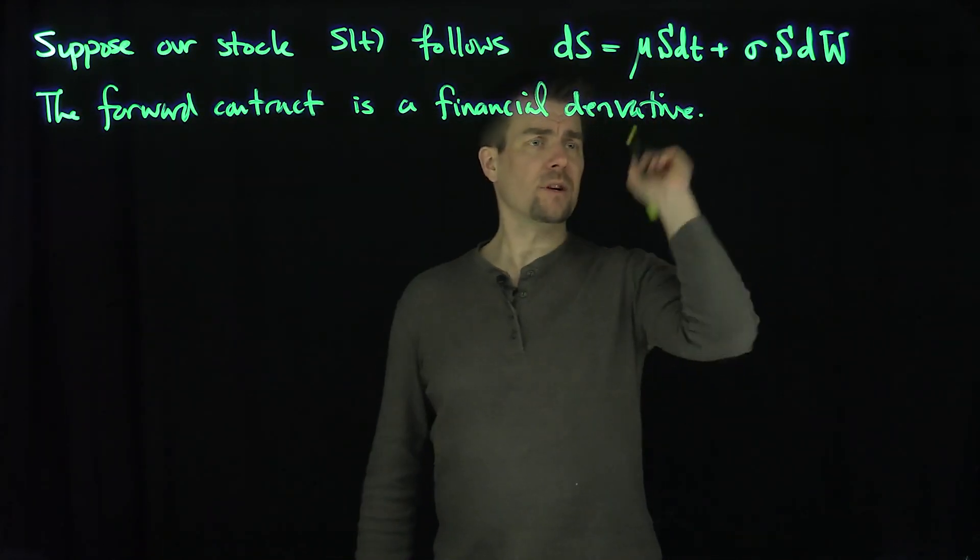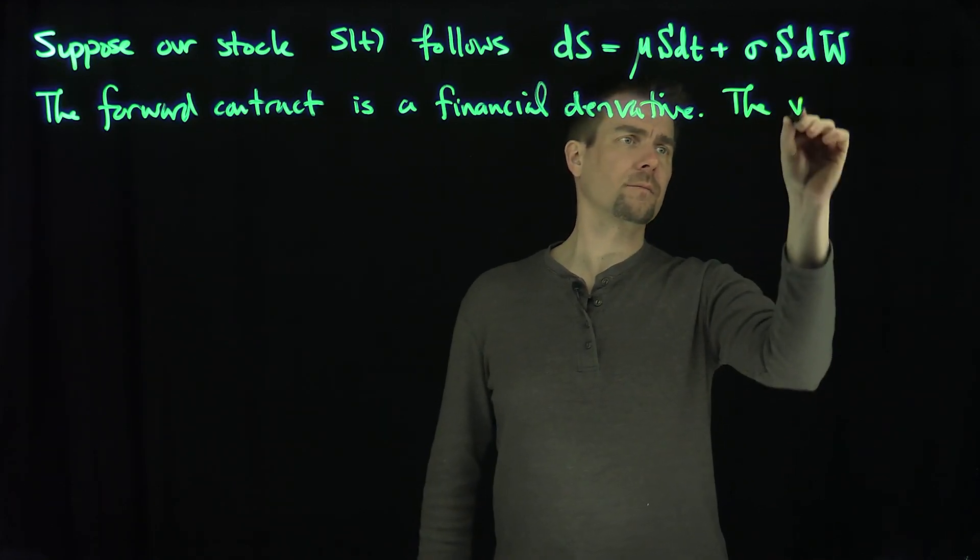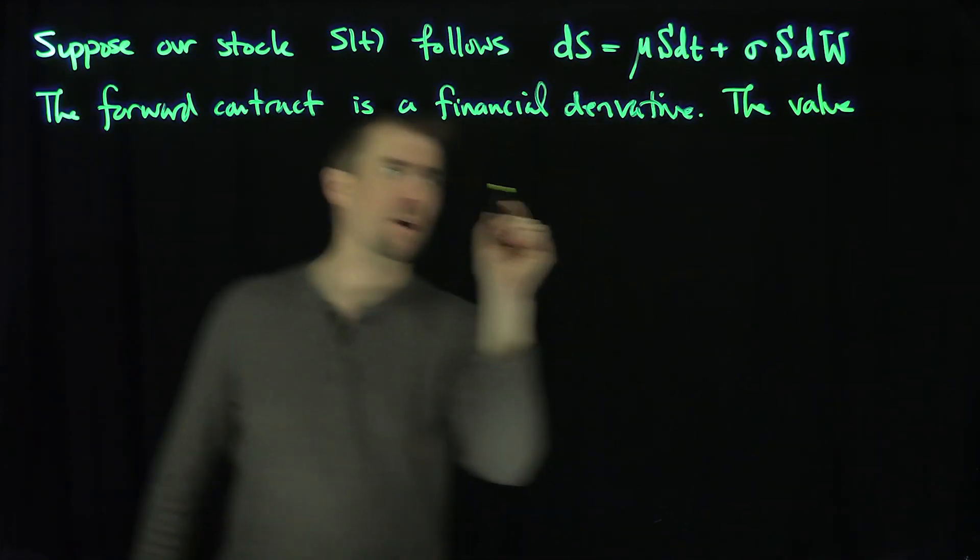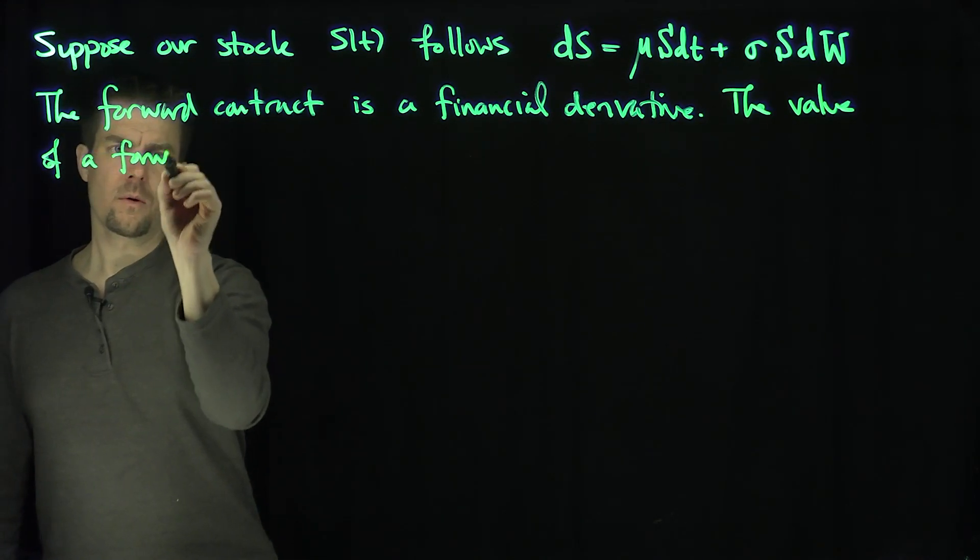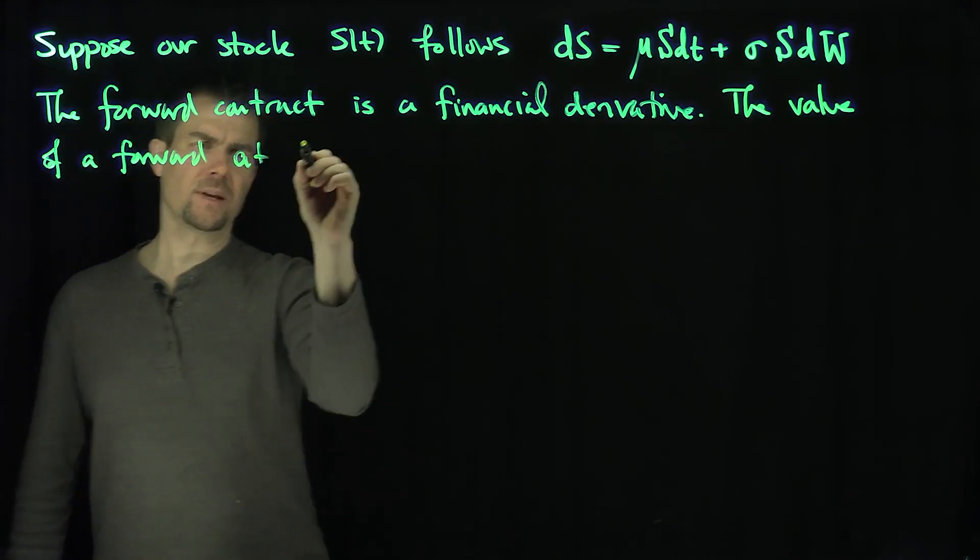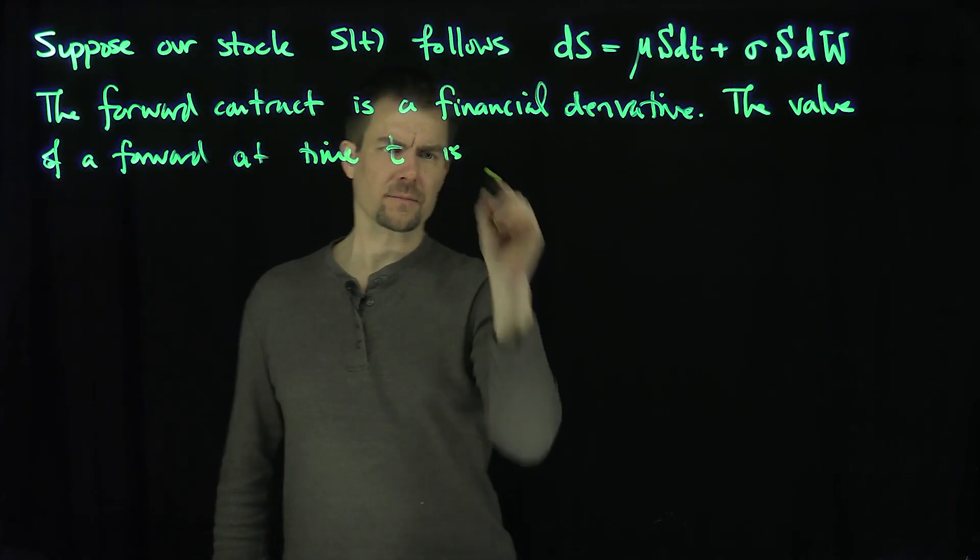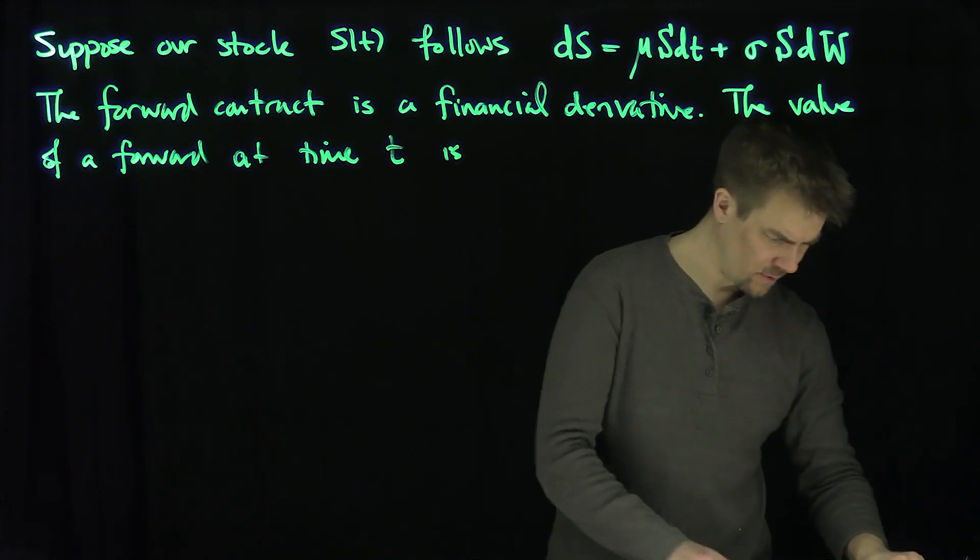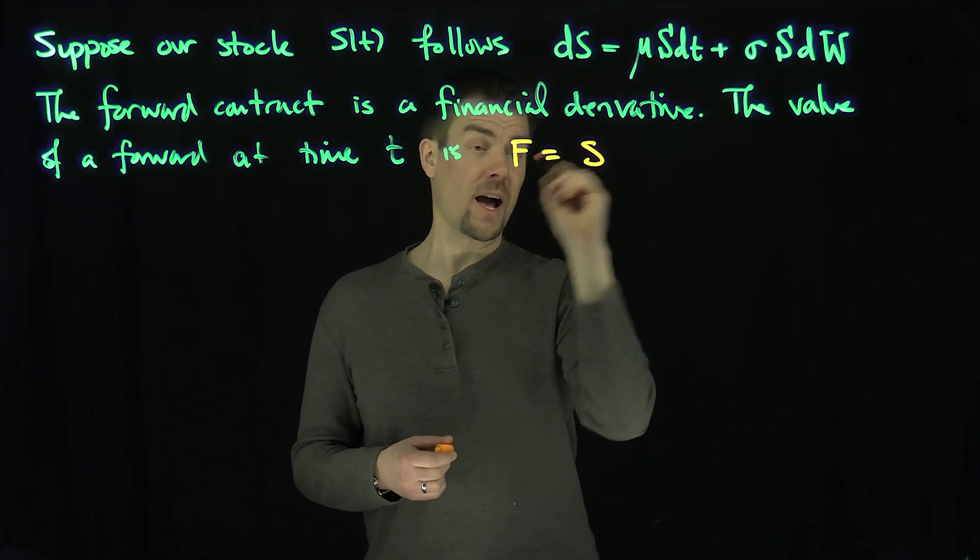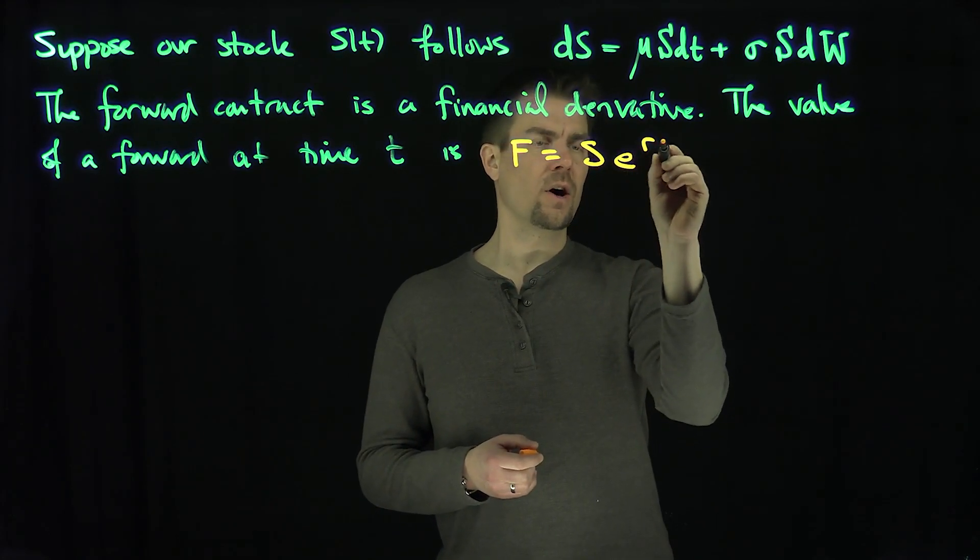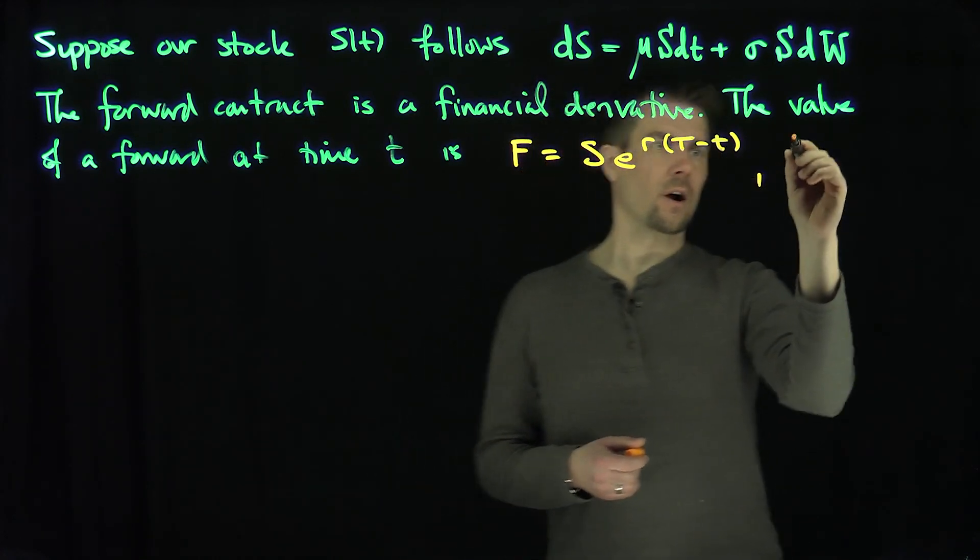And so we've seen in previous videos that the value of a forward contract at time t is F = S(t) * e^(r(T-t)), where r is the risk-free rate and T is the expiration of the contract.